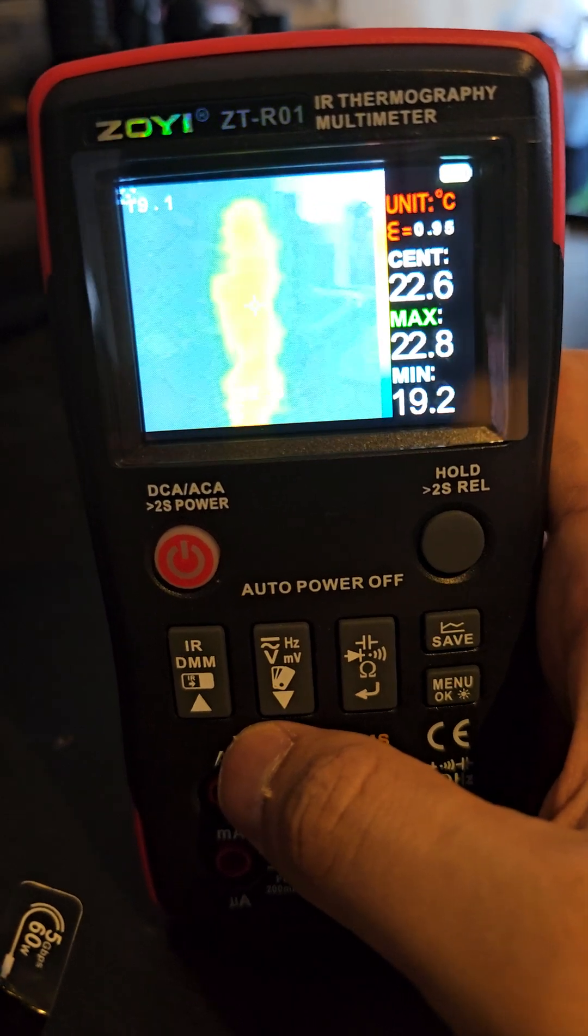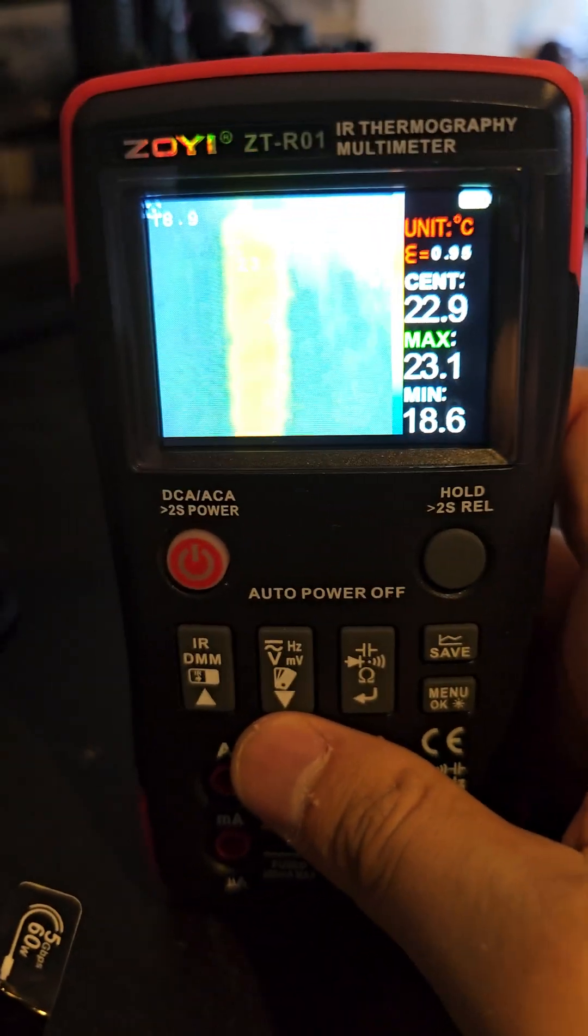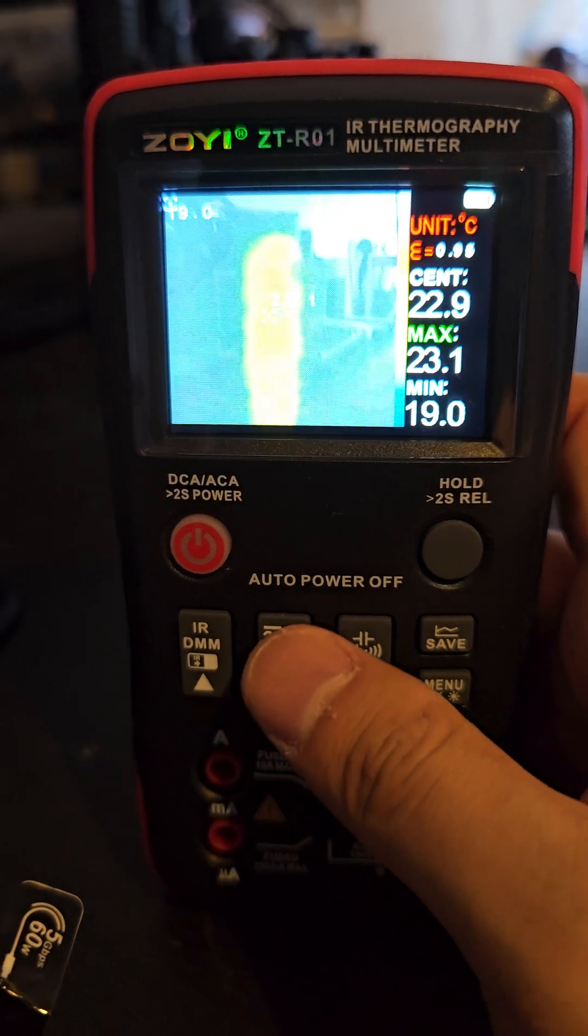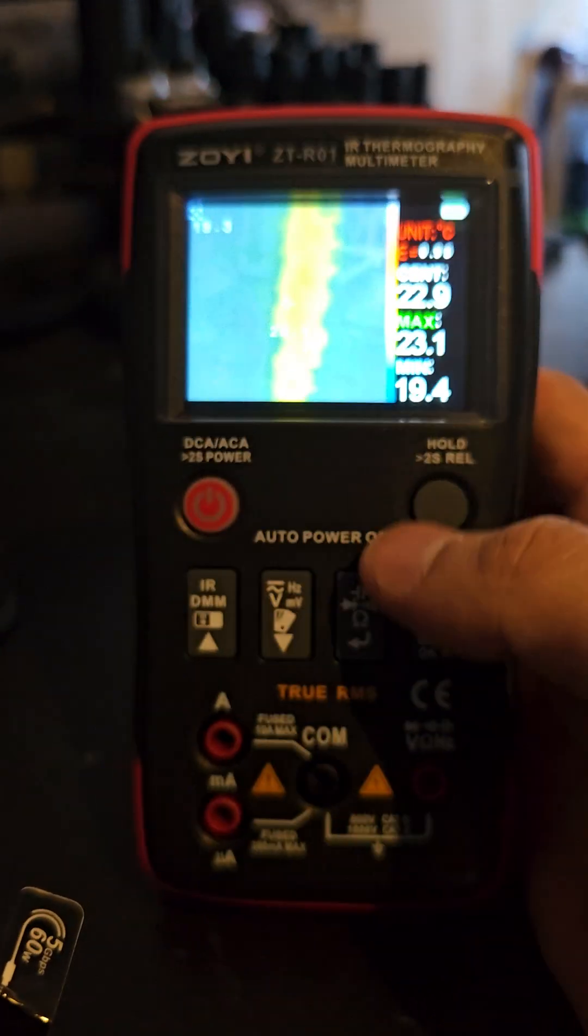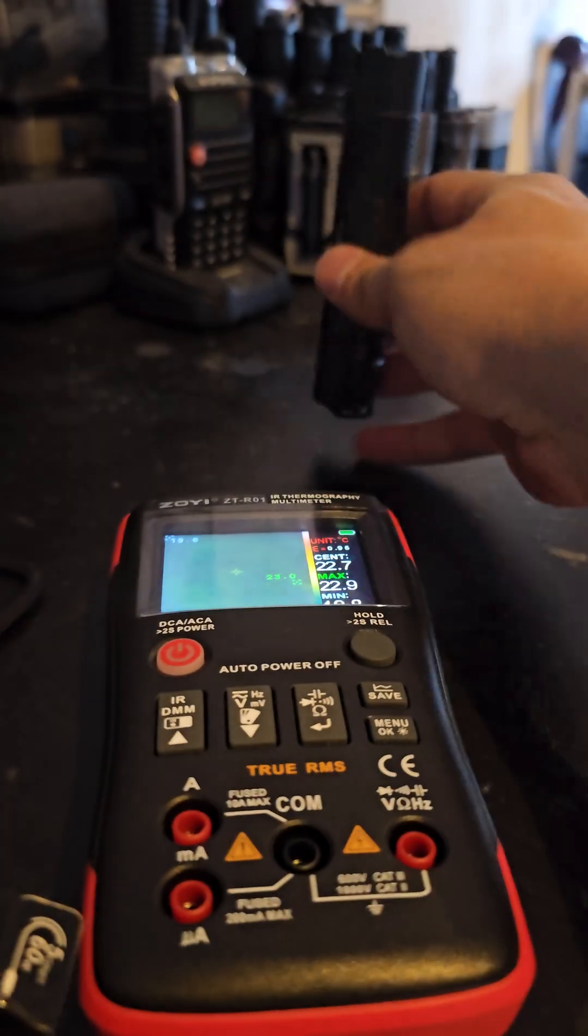I'm going to be measuring the temperature of my Convoy S8 with the Zoyi ZT-R01. It's got an infrared thermal camera. So let's turn this on.